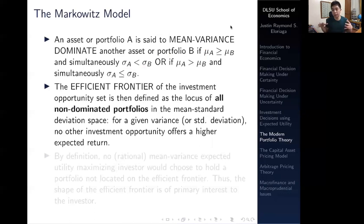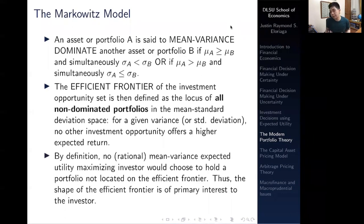We can form what we call an efficient frontier. The efficient frontier of a particular investment is essentially an opportunity set that is defined as the locus of all non-dominated portfolios in the mean-variance space. This means that for a particular given variance or standard deviation, no other investment opportunity offers a higher expected return. By definition, no rational mean-variance expected utility maximizing investor would choose to hold a portfolio that is not in that efficient frontier, because they would always choose a portfolio that yields as high expected return for a given particular risk level. Thus the shape of the efficient frontier is of primary interest to the investor.